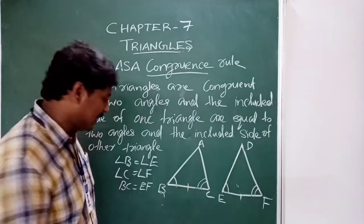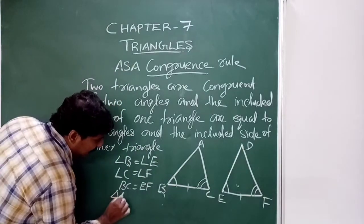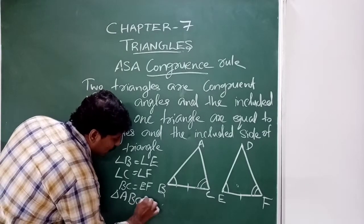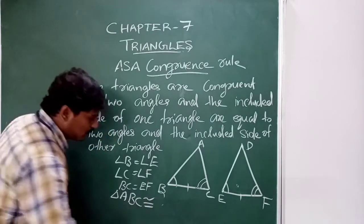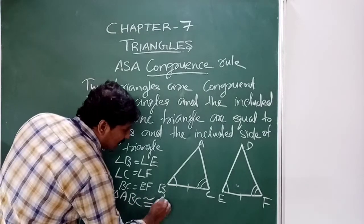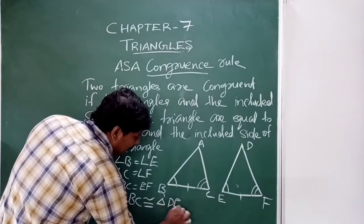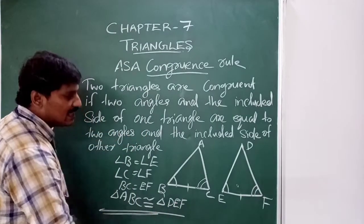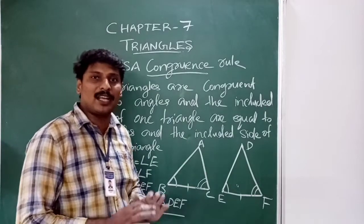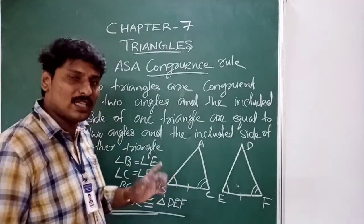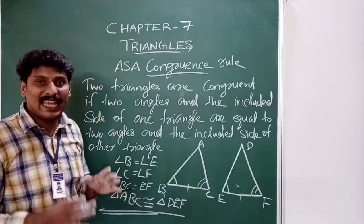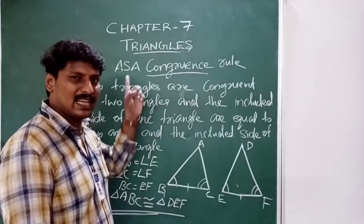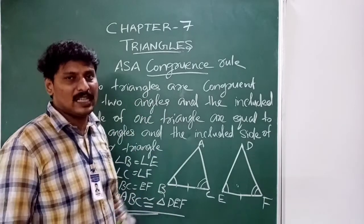AC is equal to DF. Triangle ABC is congruent to triangle DEF by ASA — Angle Side Angle congruency.